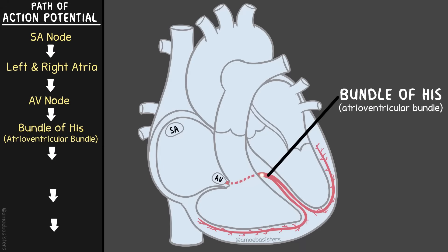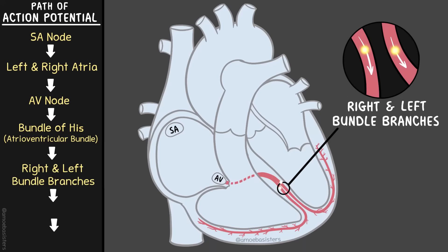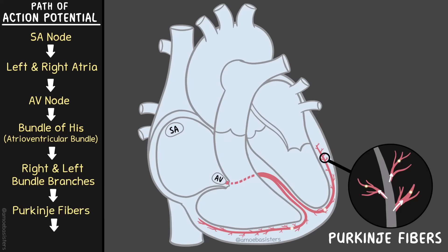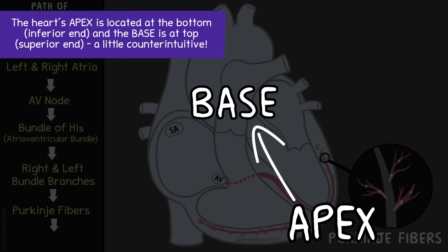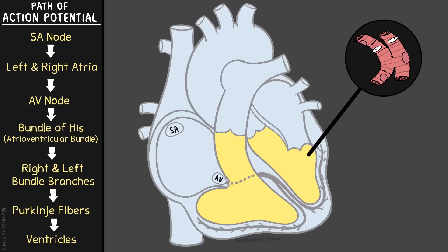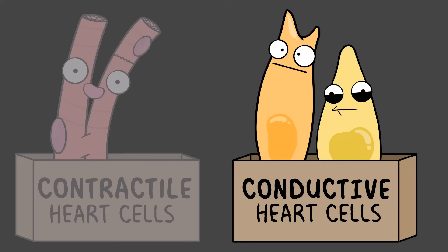From the AV node, the action potential continues to be propagated to the bundle of His, also called the atrioventricular bundle. This bundle has a right and left bundle branch, which supply each ventricle respectively. From the bundle branches, you go to the Purkinje fibers — these are conductive fibers that spread the impulse to the cardiac muscle cells in the ventricles. It starts at the apex and then moves to the base of the heart, allowing the ventricles to contract.